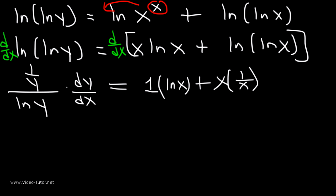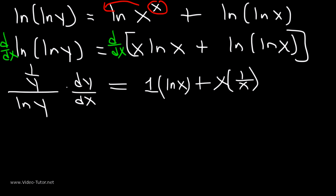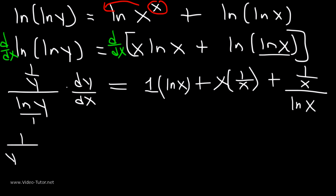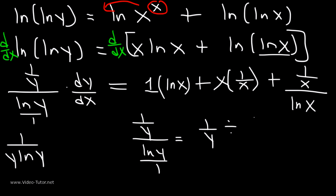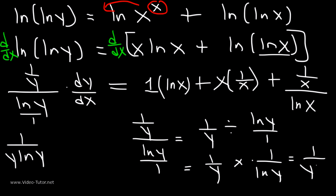Next, we need to differentiate ln(ln(x)), which is very similar to ln(ln(y)), except it won't have a dy/dx. The derivative of the stuff on the inside, ln(x), is 1/x, divided by what's on the inside, ln(x). So that gives 1/(x·ln(x)). Also, 1/y divided by ln(y) is the same as 1/(y·ln(y)), using the keep-change-flip principle: 1/y ÷ (ln(y)/1) = 1/(y·ln(y)).